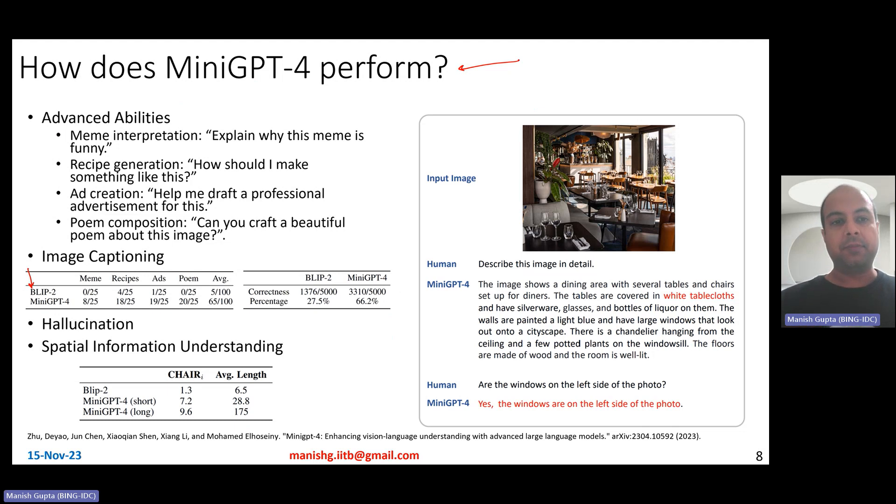And they tried to figure out how well it performs compared to Blip2 across several advanced capabilities, like meme interpretations explain why this meme is funny, or recipe generation how should I make something like this, ad creation help me draft a professional ad for this, or poem composition how can you craft a beautiful poem about this image? So they also tested it on image captioning data. And here are the results. So out of the 25 examples that they tested for, that they used for each of those tests, you find that Blip2 really performs poorly compared to mini GPT-4. Out of the overall 100, mini GPT-4 scores 65. Well, the scoring is also done by GPT-4. They take the outputs and ask GPT-4, what do you think about those outputs? Are they good enough? Which one is better? And so on. So they find that mini GPT-4 fares reasonably well, but Blip2 is really, really poor. Compared to on image captioning data also, you find that in general mini GPT-4 is correct 66.2% times on a large dataset of 5,000 images, but Blip2 is not so good.